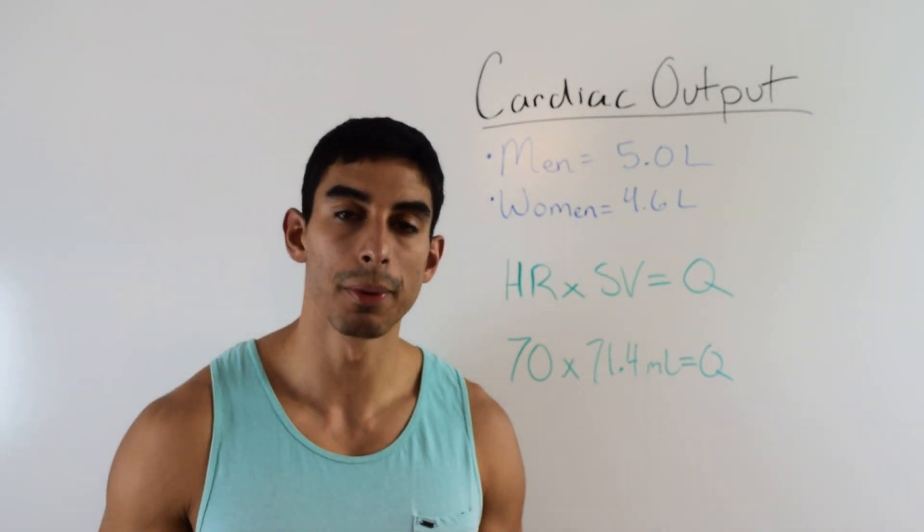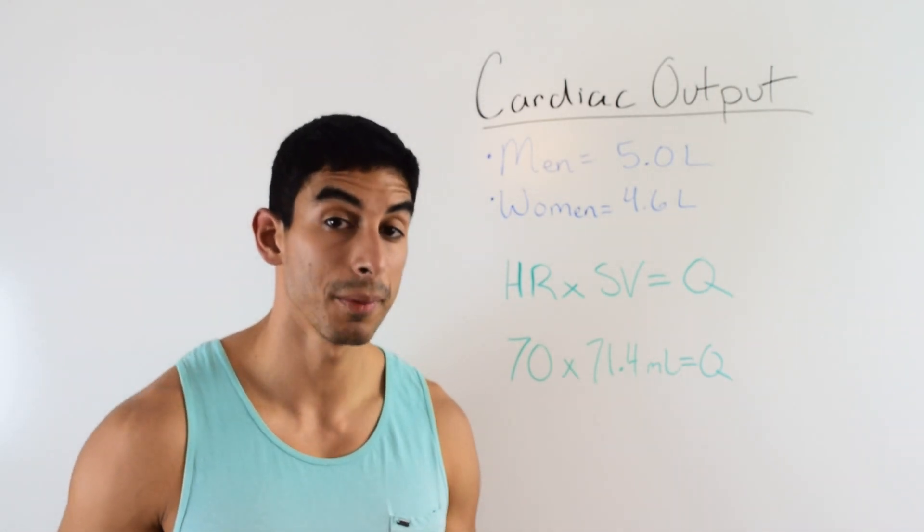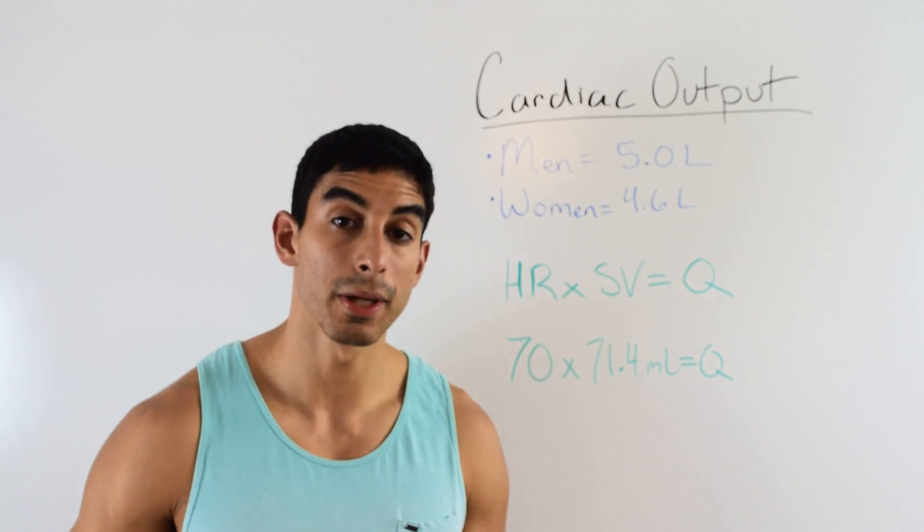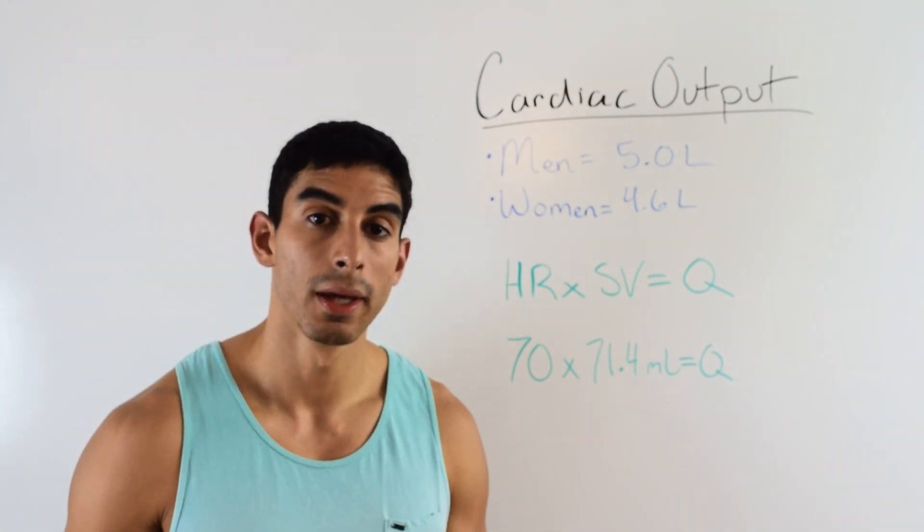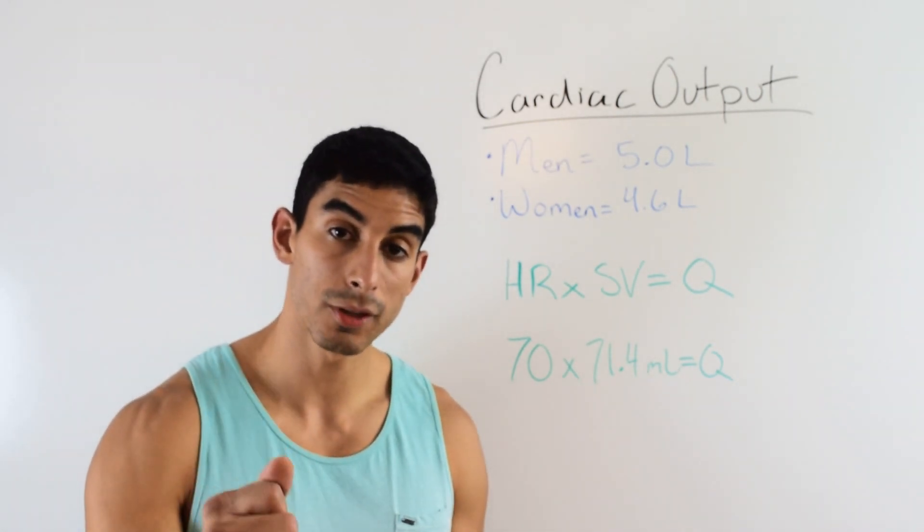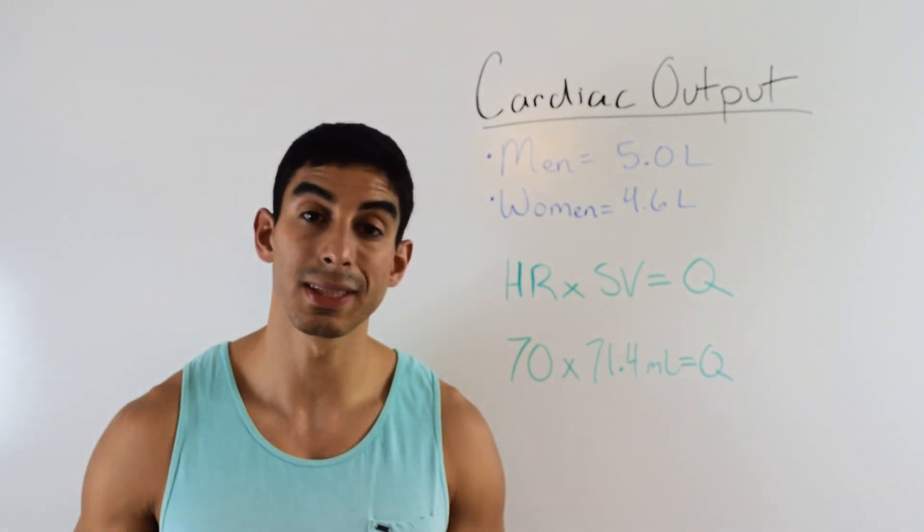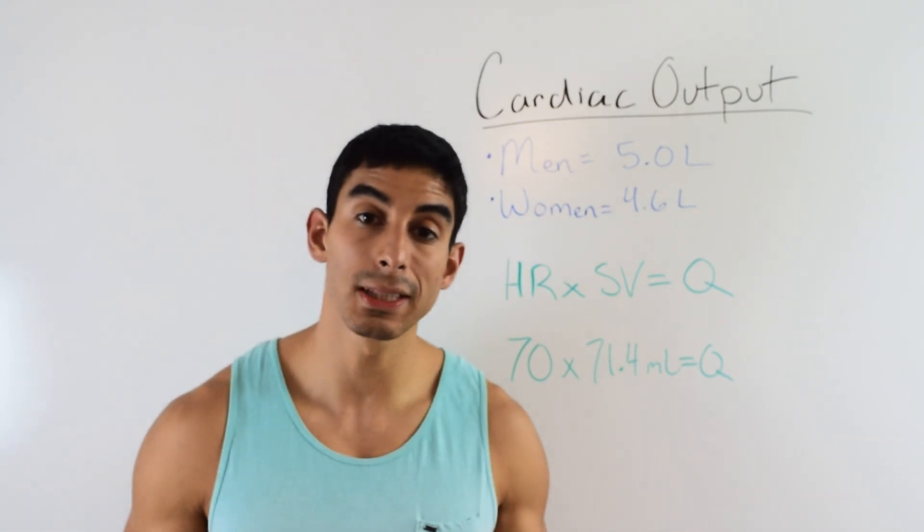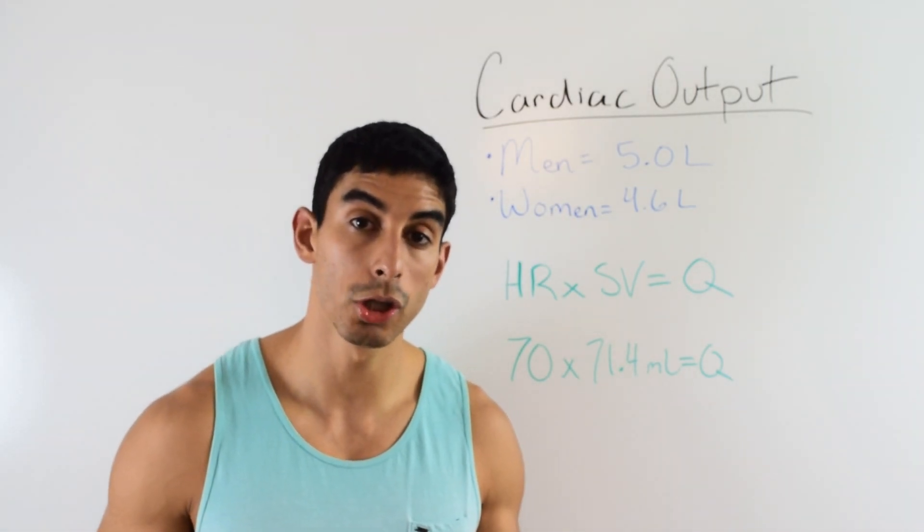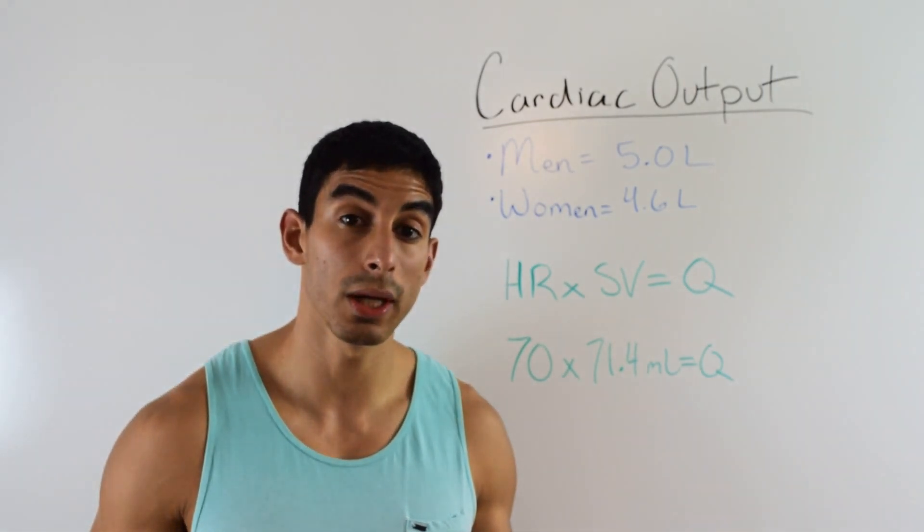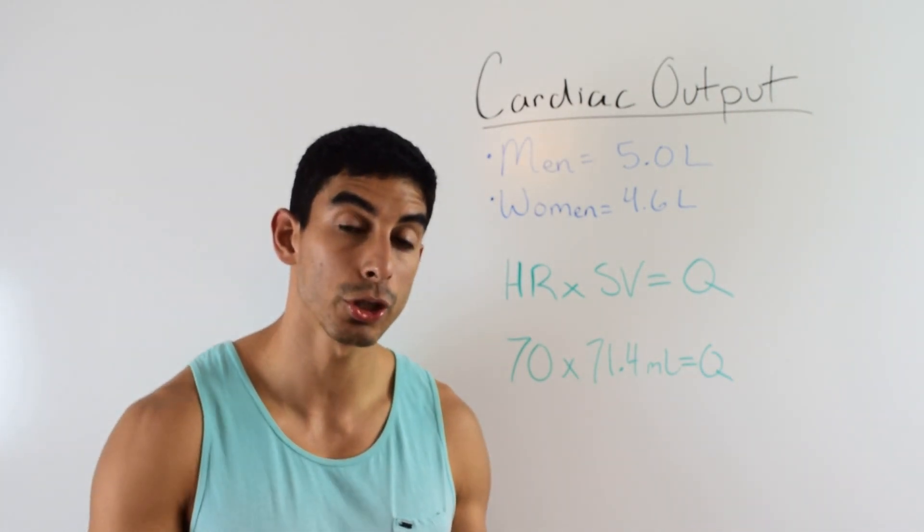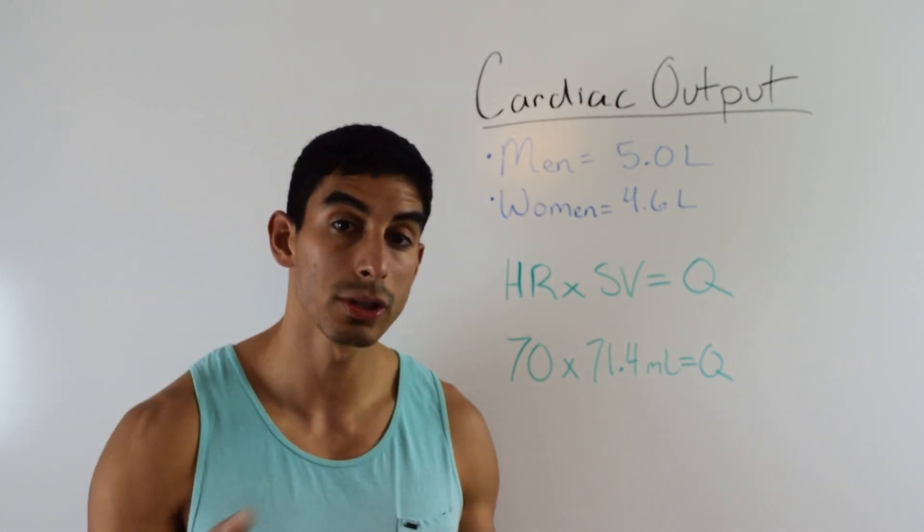Now when it comes to cardiac output, there's two things that go into the equation. I've already mentioned these a couple of times, but it's going to be heart rate and stroke volume - the number of times your heart beats and the amount of blood your heart pumps each beat. And you see this letter Q here, you might see cardiac output expressed as a Q. That's just a shortened way of using cardiac output. You might see an equation Q equals HR times SV.